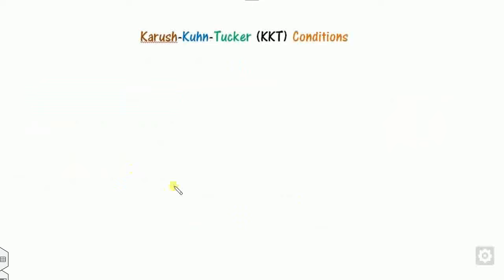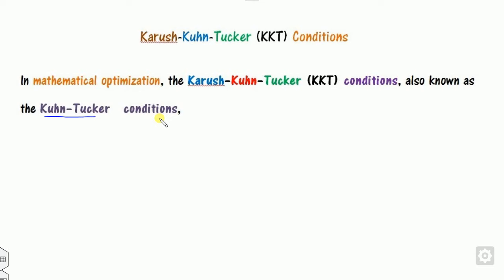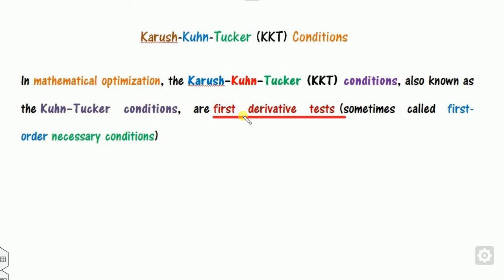So what are the KKT conditions? The abbreviation KKT stands for Karush-Kuhn-Tucker conditions. It is also known as the Kuhn-Tucker condition, or it is basically called the first derivative test. The first derivative test means it involves only F dash and does not consider the F double dash. It is sometimes called the first order necessary conditions.